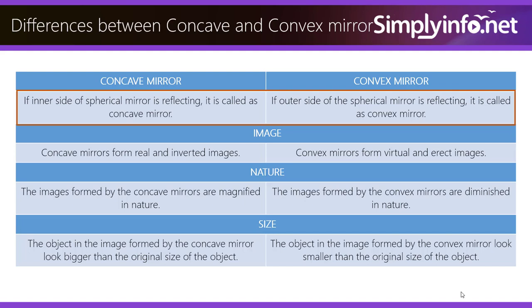Concave mirrors form real and inverted images, whereas convex mirrors form virtual and erect images.